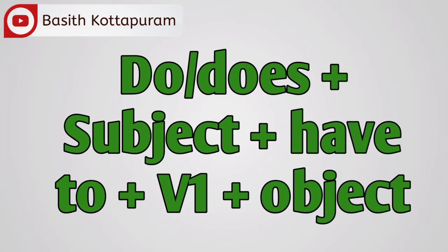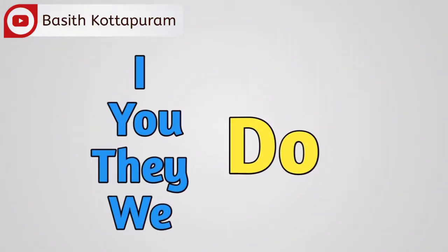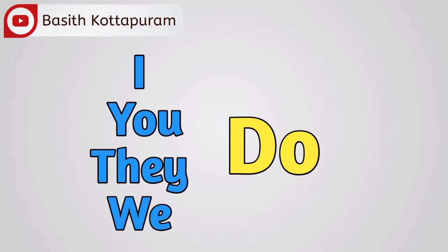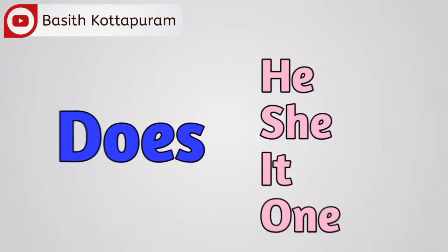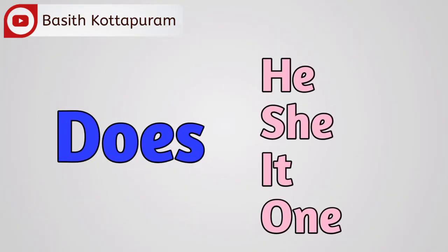Do or does plus subject plus have to plus we want plus object. Adil do verundadu ayyuu dhundu kudayyum, does verundadu hee shi itu and dayyum kudayane.